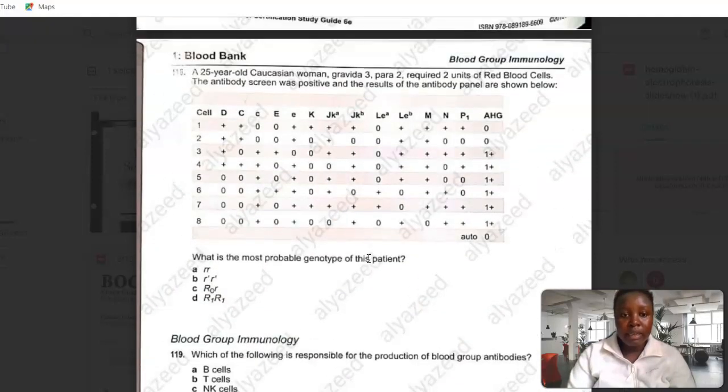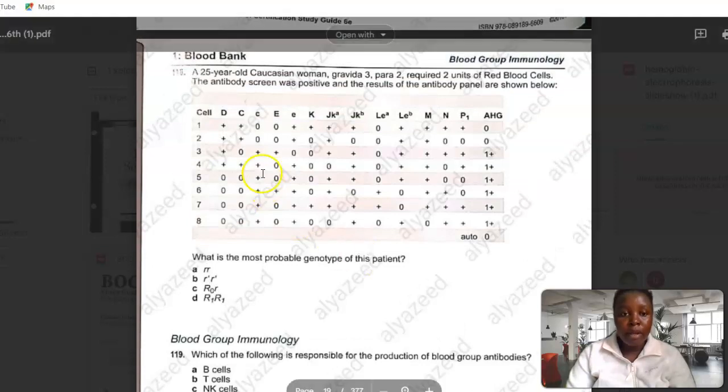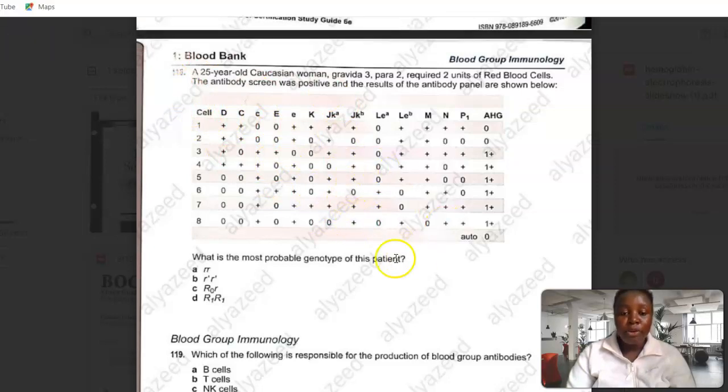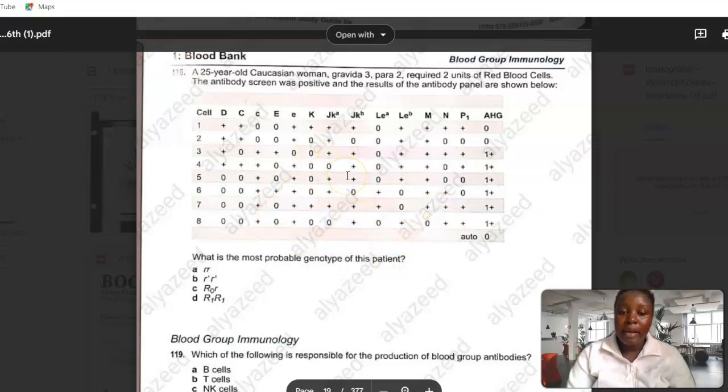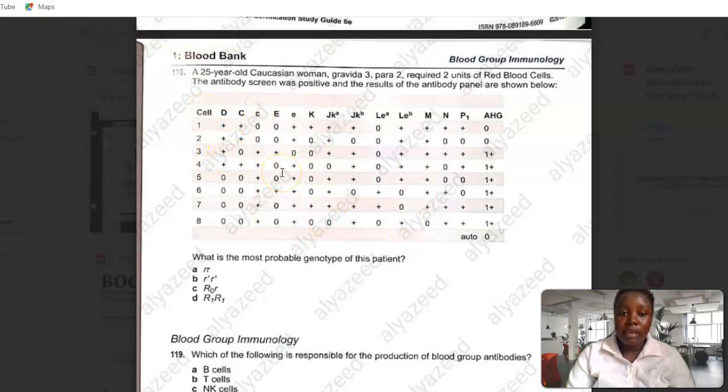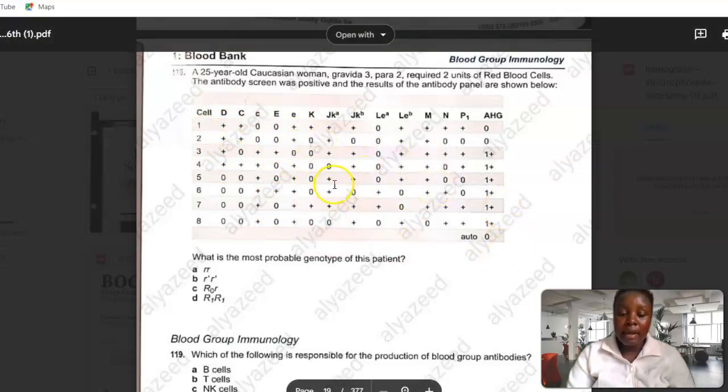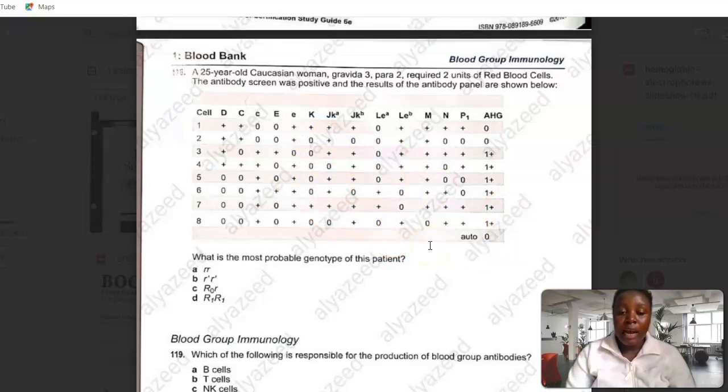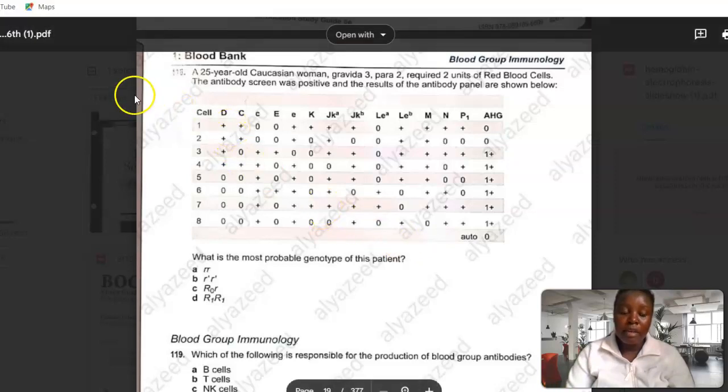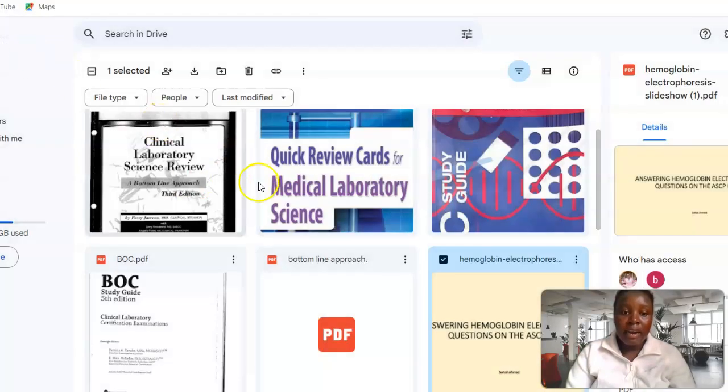Most of us, especially in my country where I come from, we didn't tackle such things like antibody panels. But you can see in the ASCP syllabus and exam, such questions repeat themselves, not necessarily in the same manner as in this book, but this book gives you a pointer of how this exam will occur and how this exam will come. This is one of the books that you need to review.